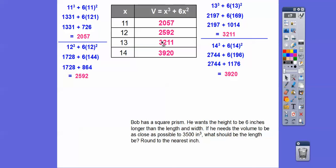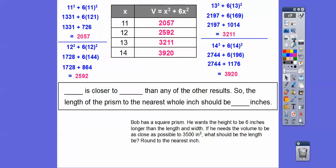Now we want to know which one's closest to 3,500. It looks like this one's going to be it. So 3,211 is closer to 3,500 than the result for 14. So we're going to use that dimension. The length of the prism to the nearest inch should be about 13 inches — it's like 13 point something, but they said to the nearest inch.